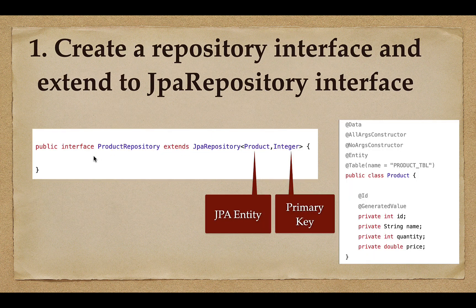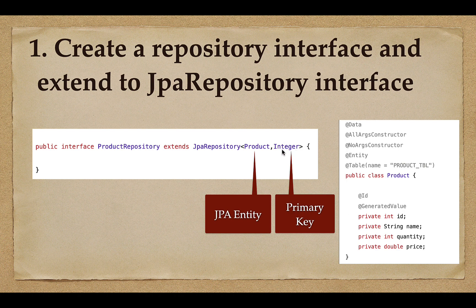To create a repository interface, we create an interface — for example, ProductRepository — which extends the JpaRepository interface. JpaRepository takes two arguments: the first is the JPA entity name, and the second is the primary key type. For example, if we have a Product JPA entity and its ID is of type Integer, we pass Integer as the second argument. Since JpaRepository is a generic interface, we must pass a wrapper class as the argument.